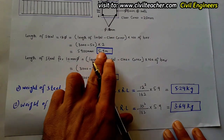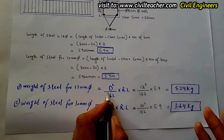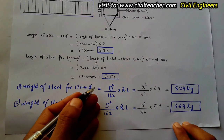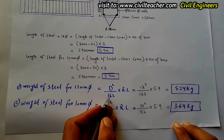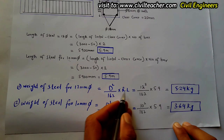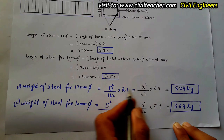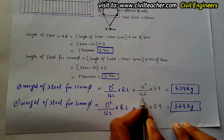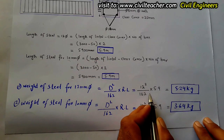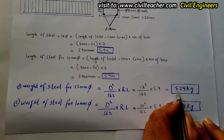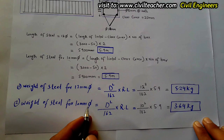Now we find the weight of steel for the 12 mm bars. The formula is D² ÷ 162, which gives us the unit weight in kg per meter, multiplied by the running length. So: 12² ÷ 162 × 5.9 = 5.24 kg for the two 12 mm bottom bars.